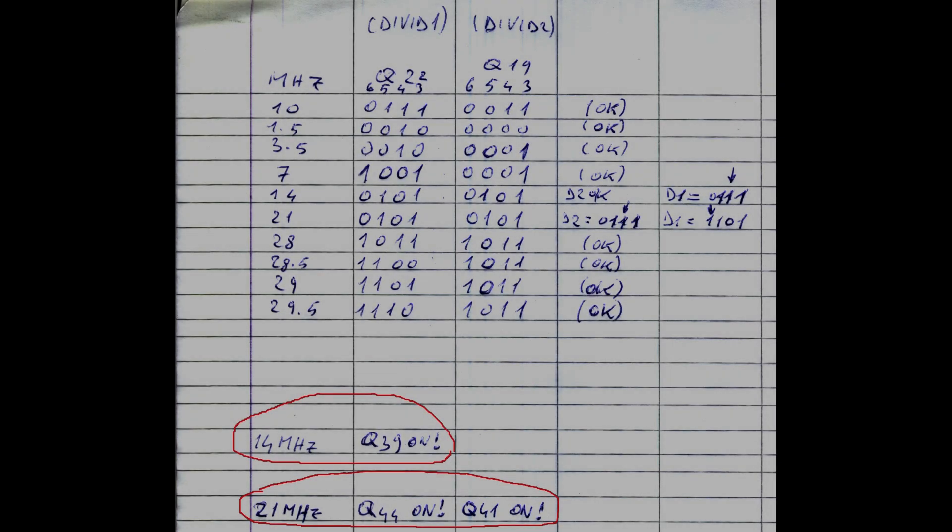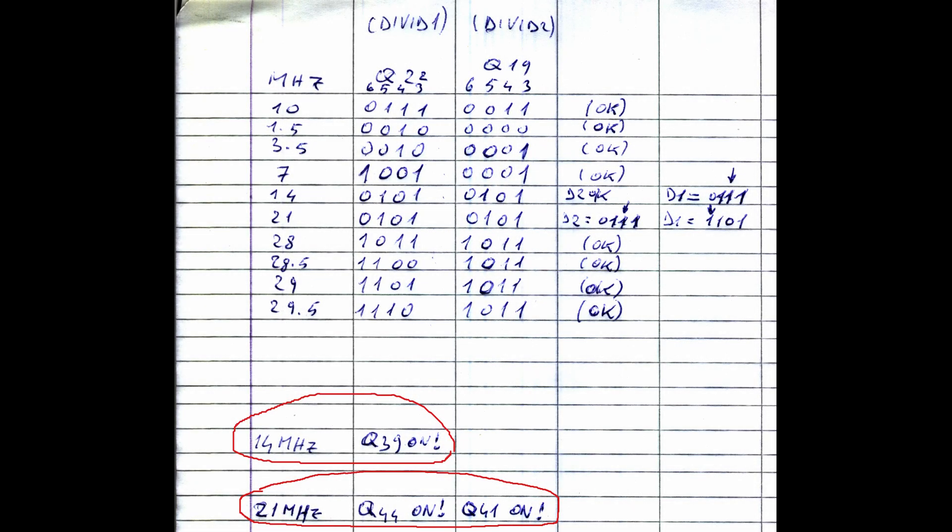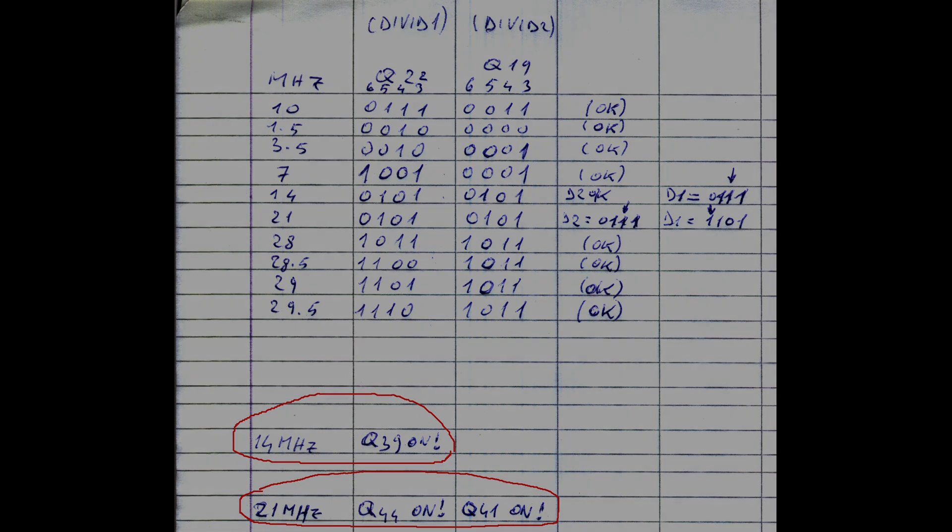And Q41 plus Q44 on 21 MHz that are both turned on but should be off. So this is really puzzling, as it seems the two faults have nothing in common. But surely the wrong transistors are turned on for some fault in the diode matrix. So let's try to investigate.